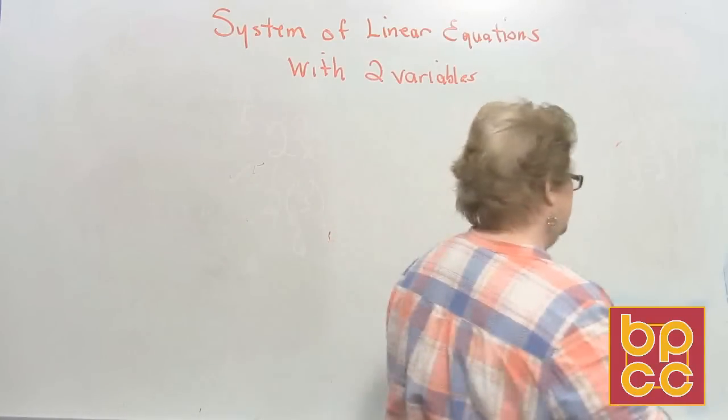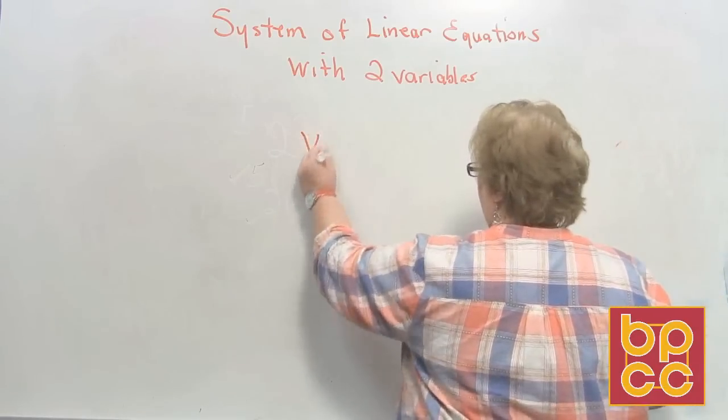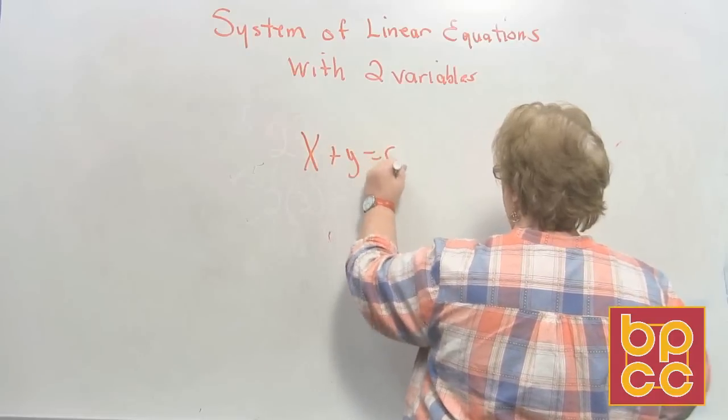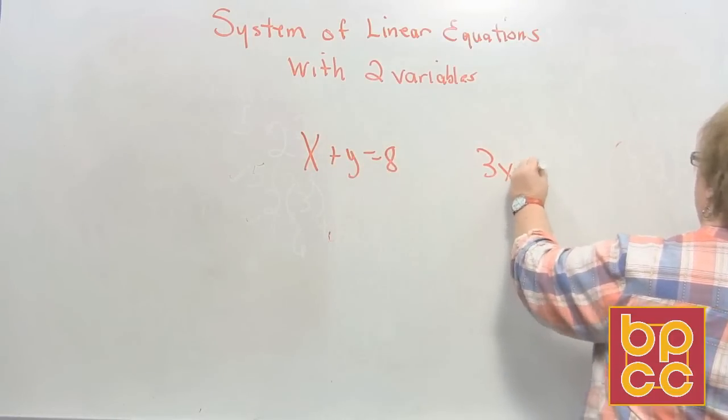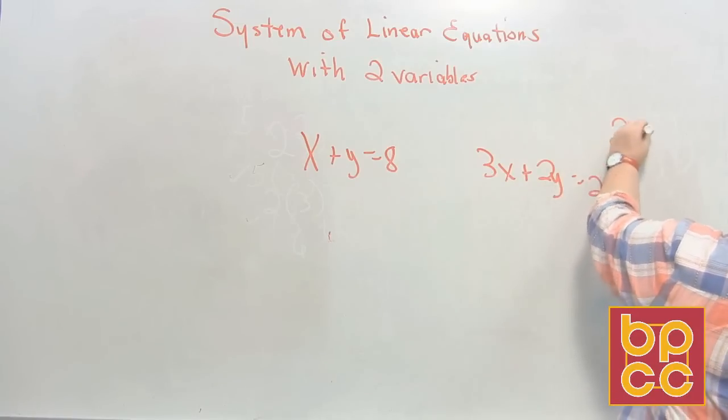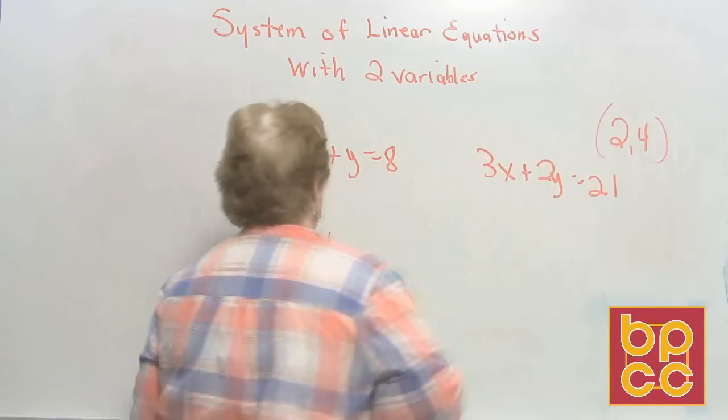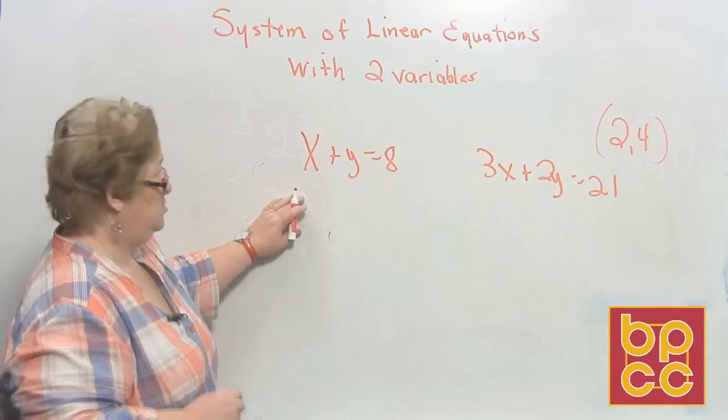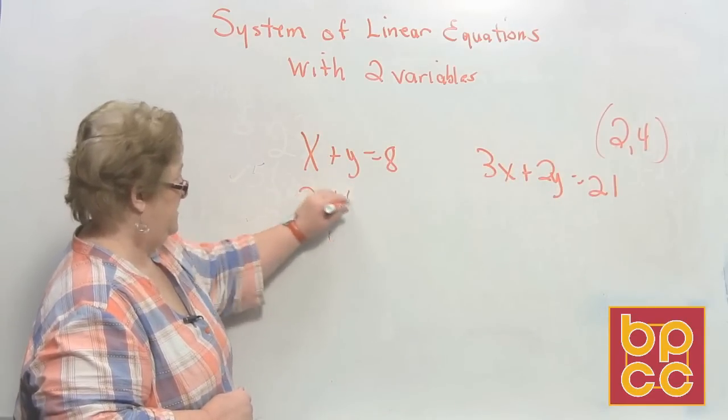I would like to do x plus y equals 8, and 3x plus 2y equals 21. I'd like to use 2 comma 4 on that. Here we go. x is 2, y is 4. 2 plus 4 does not equal 8.